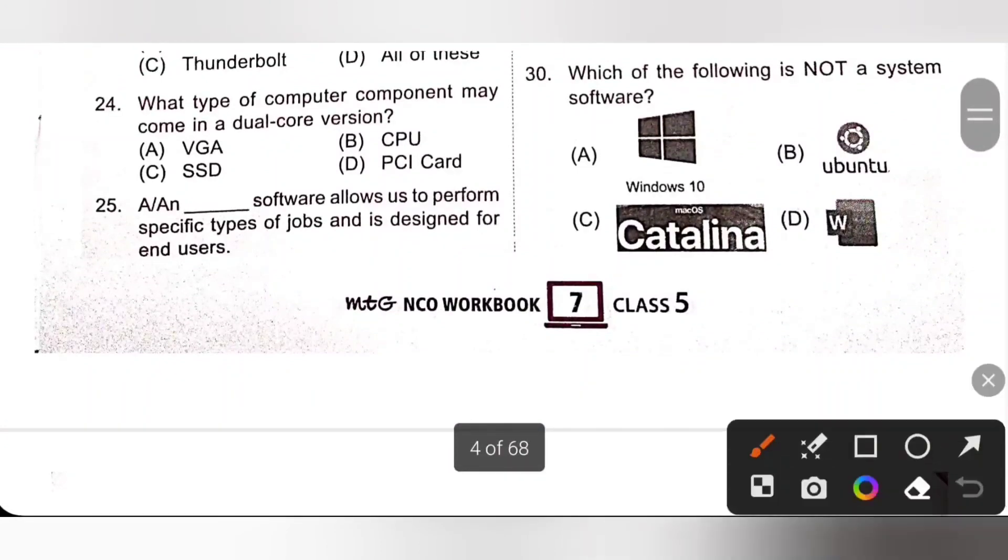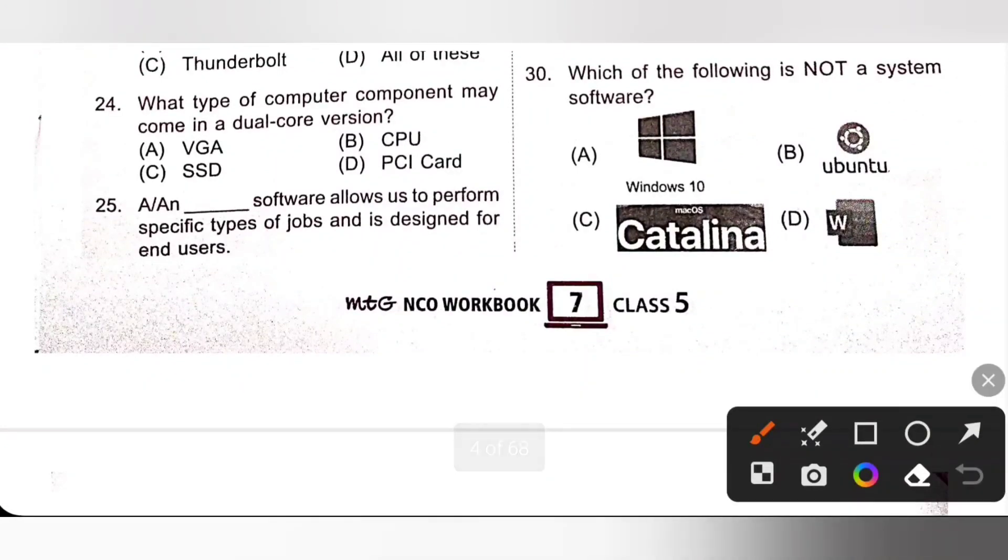Question 24. What type of computer components may come in a dual core version? We know dual means 2, so dual core term is used for CPU that contains 2 execution cores for a physical processor. Option B is the correct answer.